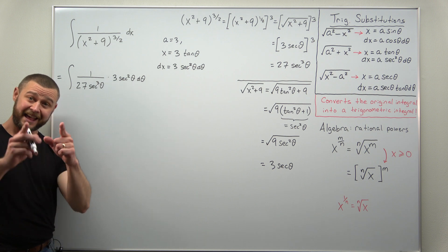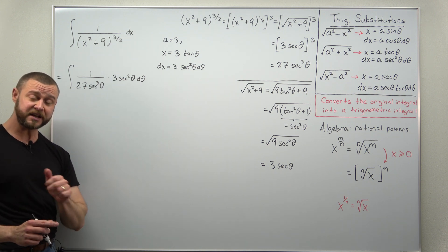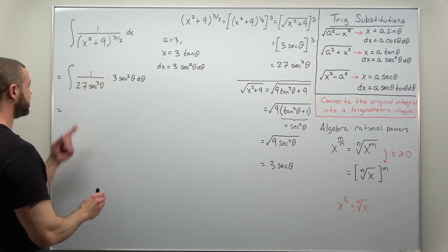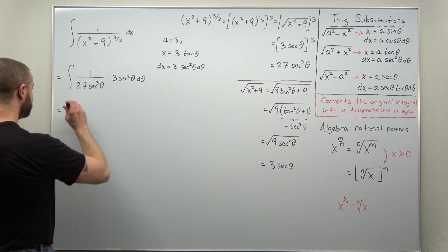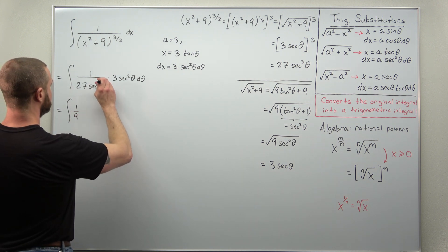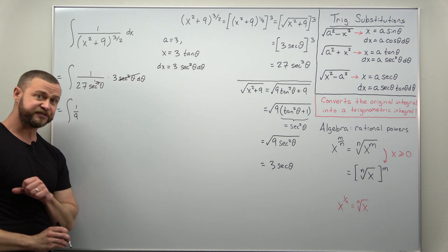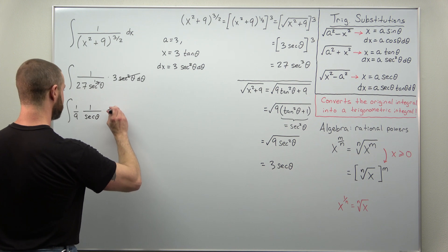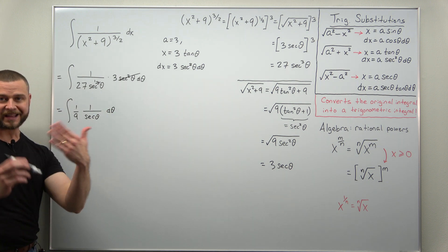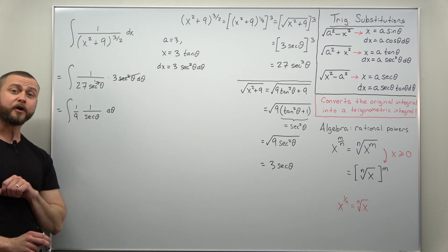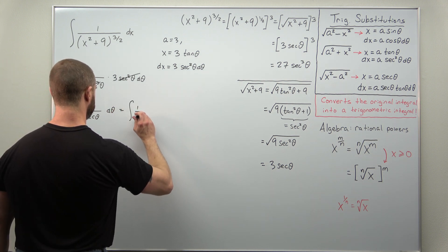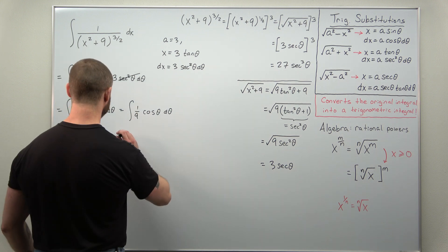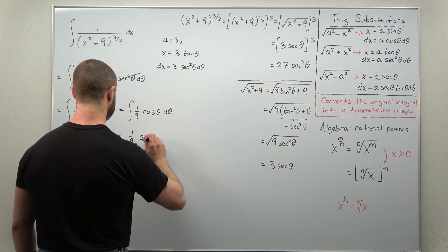This simplifies nicely. Cancel a factor of 3 — think of 27 as 3 × 9 — giving 1/9. Cancel two factors of secant, leaving 1/secant = cosine θ. So we get (1/9) cos θ dθ, which integrates to (1/9) sin θ + C.